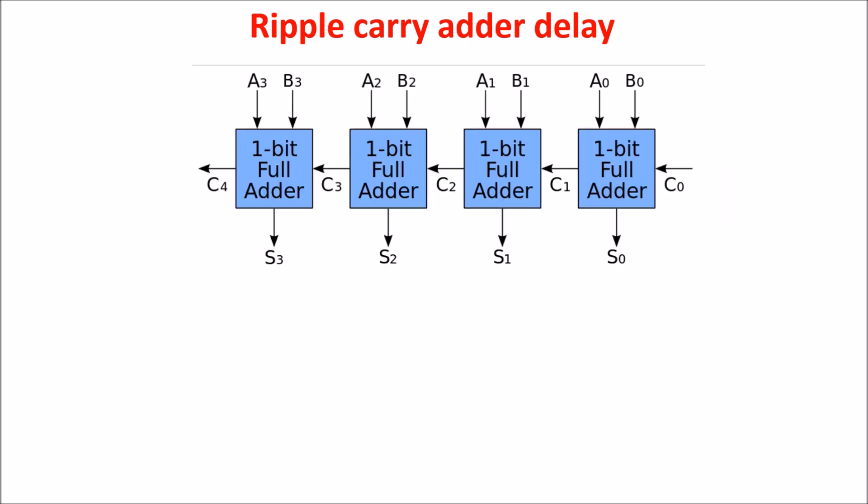If we build a ripple carry adder in this way, we can say that S0 is stable after T sum and carry one is produced after T carry. In order to stabilize S1, we have to wait the carry one plus T sum of the second adder. For S2, we wait two T carry plus T sum and so on.